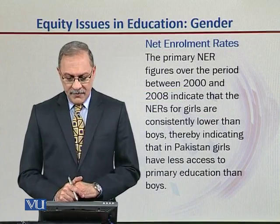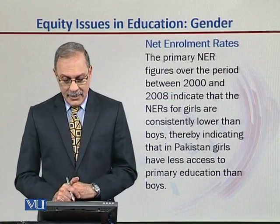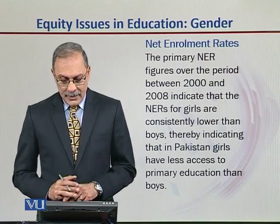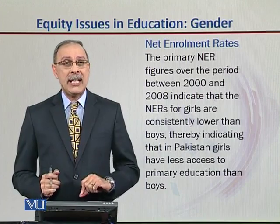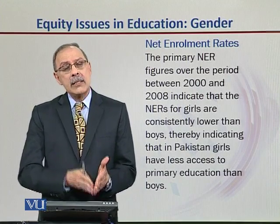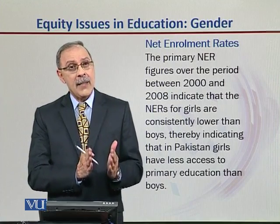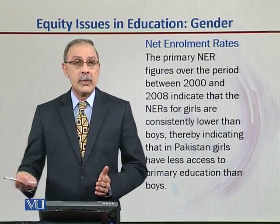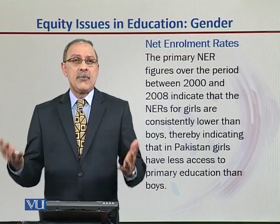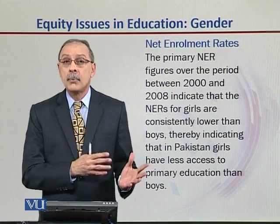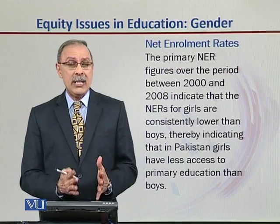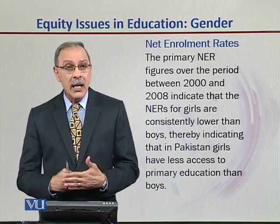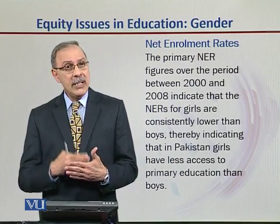The primary net enrollment rate figures over the period through 2008 indicate that for girls, enrollment is consistently lower than for boys, indicating that in Pakistan girls have less access to primary education than boys, and this trend continues. If girls have less access at the primary level, chances of them getting access at the secondary and tertiary levels also remain low — because you can't suddenly access secondary or tertiary education with no primary education. So primary education for girls is absolutely critical. How are we going to make sure that our young girls get to school is really the big question.